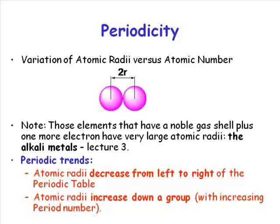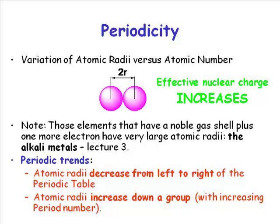The atomic radii decrease from left to right in the periodic table. As you add protons, the nuclear charge increases. But as you add electrons, there is some shielding of other electrons occurring, but not enough to compensate for the increasing nuclear charge. So what happens as you move from left to right across the periodic table, because of this shielding factor, is the effective nuclear charge increases from left to right across the periodic table.